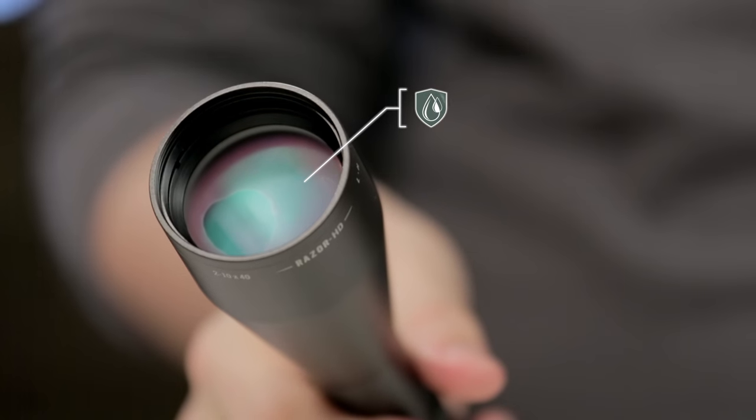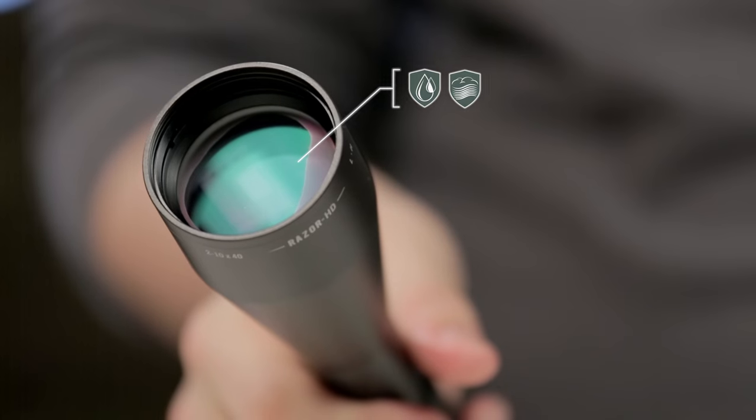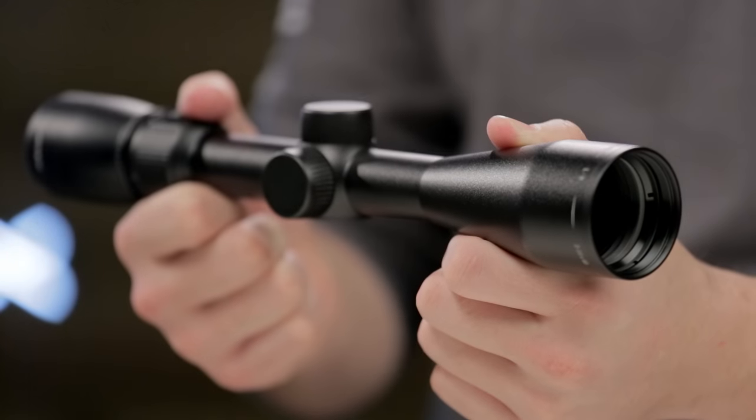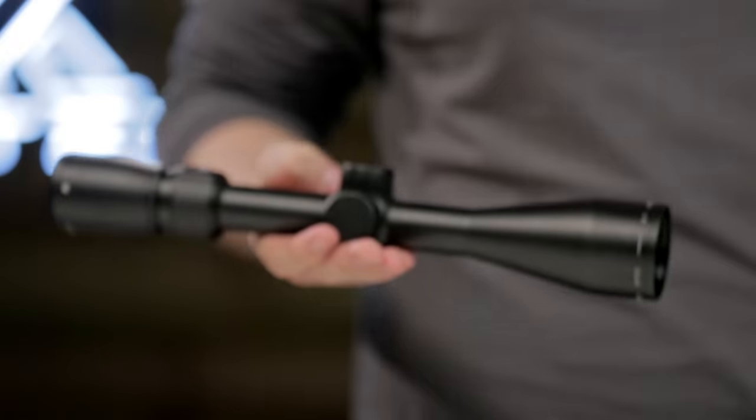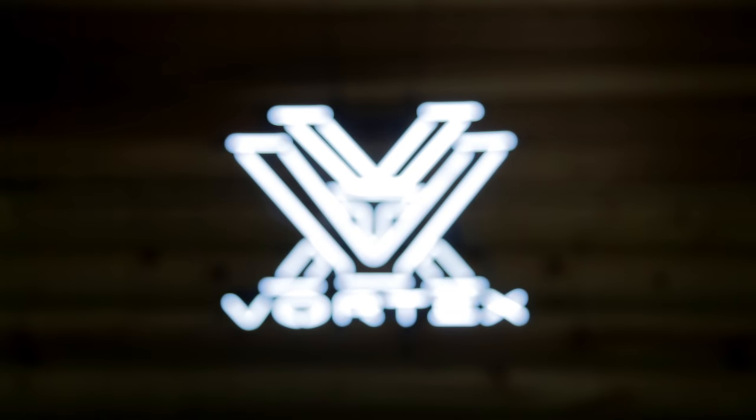Strong O-ring seals and argon purging guarantee waterproof and fog-proof performance even in the worst weather conditions. The Razor LH gives hunters and shooters premium optics and performance in a streamlined, lightweight package that's covered by the Vortex VIP Warranty.